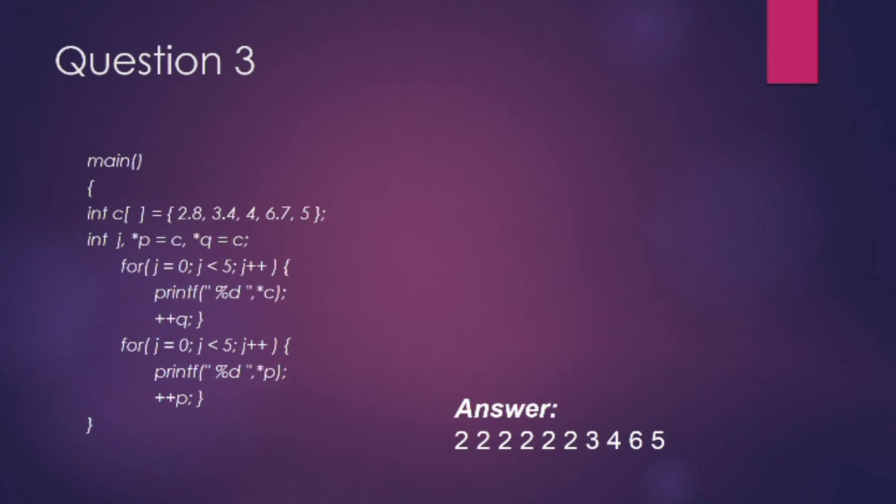Two concepts are important here. First, there is an integer array and we are assigning float, but integer values will get stored in that array. Second, look carefully at the code and check what is incremented, what is not, and what is printed. You will get the correct answer.